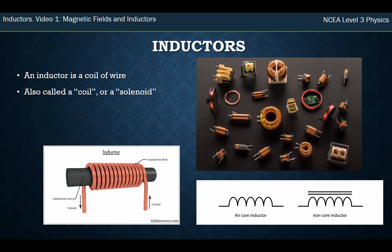So this year we're looking at not just a straight wire, we're looking at coils of wire. And a coil of wire is called an inductor. It's also called a solenoid, is a term you might come across. For level 3, you can consider a solenoid and an inductor the same thing.